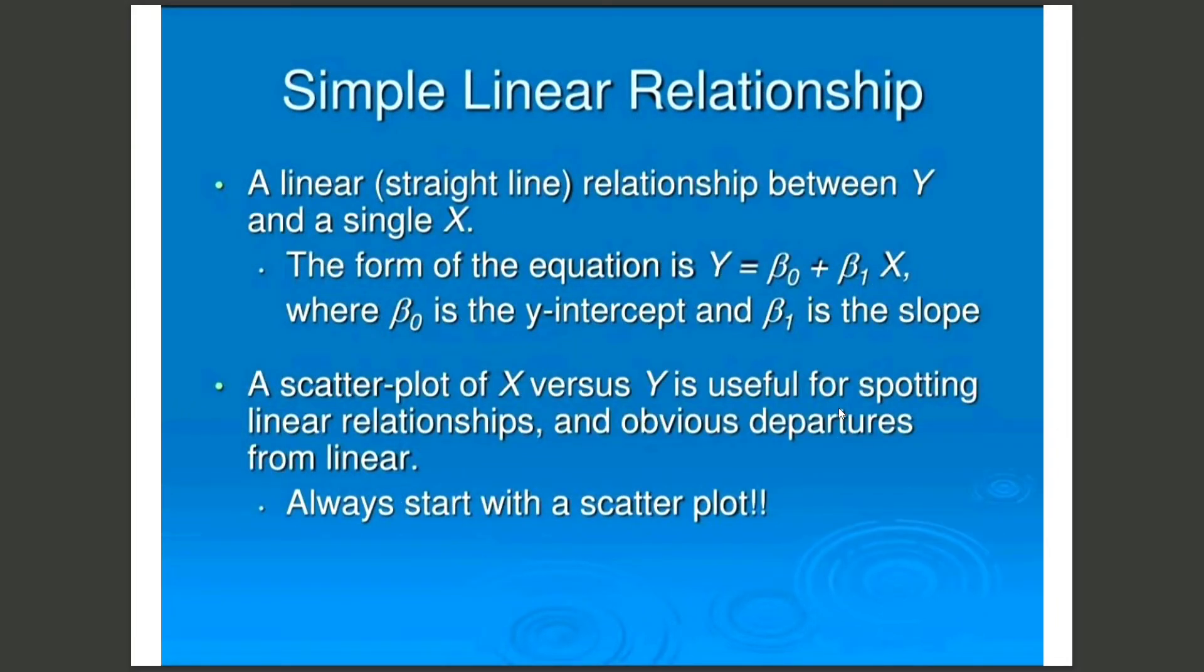Simple linear relationship: A linear straight line relationship between Y and a single X. The form of the equation is Y equals beta naught plus beta 1 times X, where beta naught is the Y intercept and beta 1 is the slope. The scatter plot of X versus Y is useful for spotting the linear relationship and obvious departures from linear. Always start with the scatter plot.